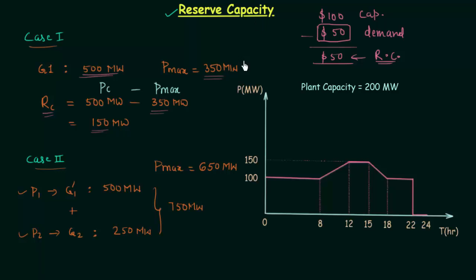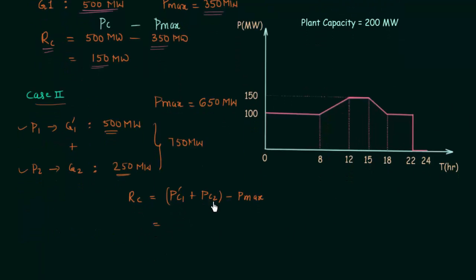So what is the reserve capacity in this case? The reserve capacity is equal to PC1, the installed capacity of generator G1, plus PC2, the installed capacity of generator G2, minus Pmax. So we have PC1 + PC2 = 750 MW total installed capacity minus 650 MW. When you solve it you will get 100 MW as the reserve capacity. So we are having 100 MW as the reserve.